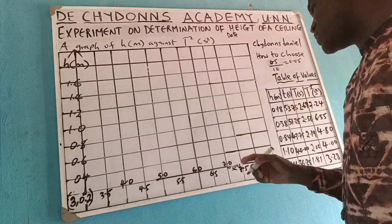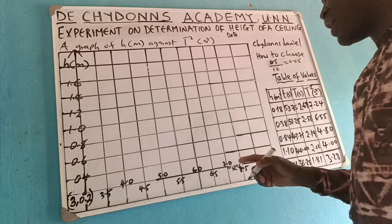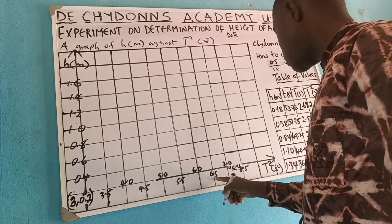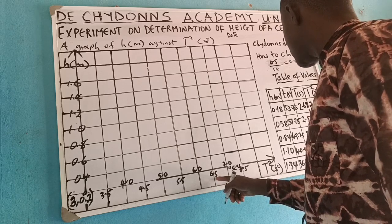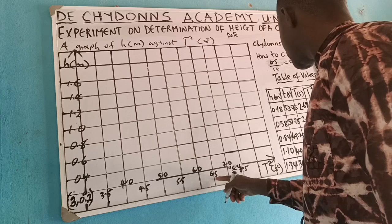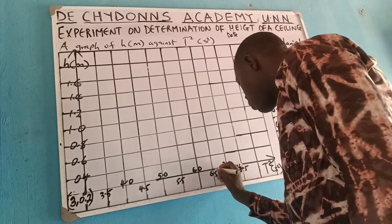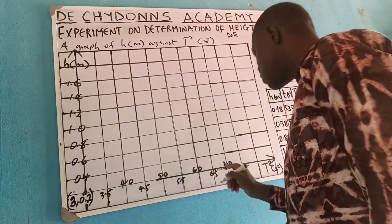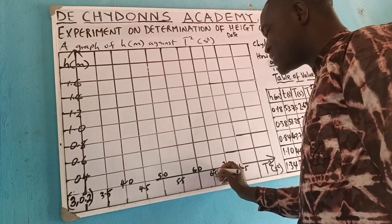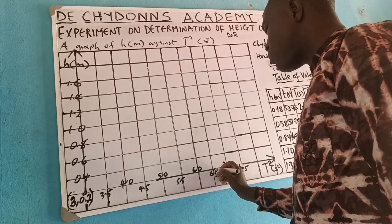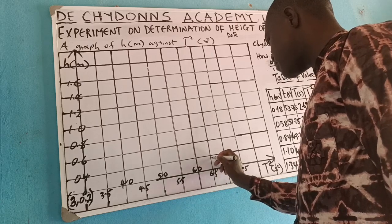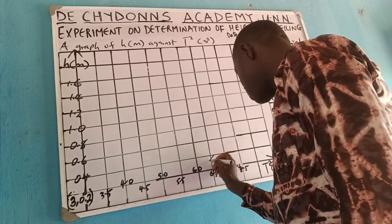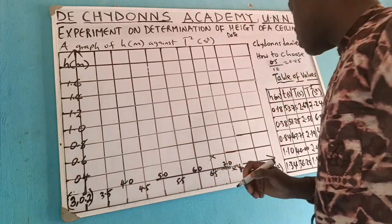For the second point, H = 0.38 against T squared = 6.55. Locate 6.55 on the horizontal axis (6.5 plus one small box of 0.05). Locate 0.38 on the vertical axis, which is close to 0.4. Plot the point here.